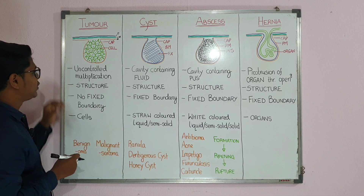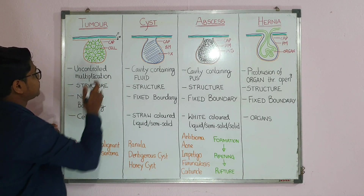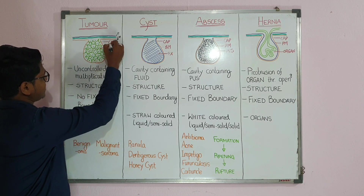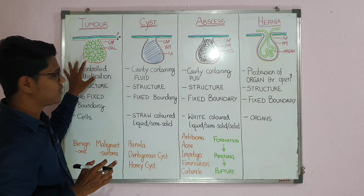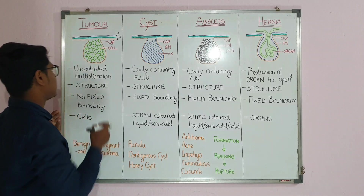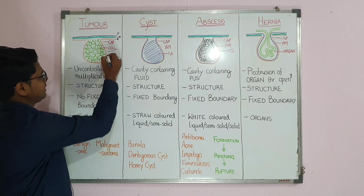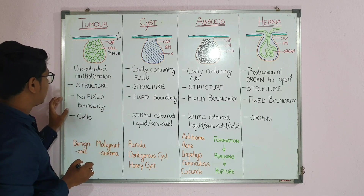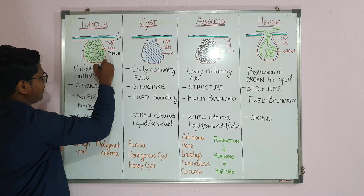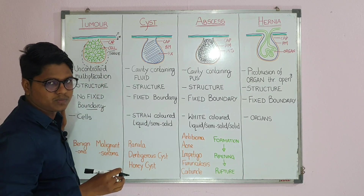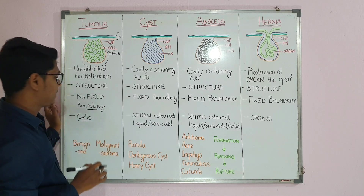The first condition is tumor. A tumor is nothing but uncontrolled multiplication — uncontrolled proliferation of cells. The structure of a tumor usually has a capsule: the outer orange one is the capsule representing the covering. In some tumors, especially malignant ones, you may not find a capsule. The inner portion will be cells or tissue. The boundary of a tumor is not fixed — it keeps growing over time. The rate may vary; some tumors grow very fast, some are a little slow.